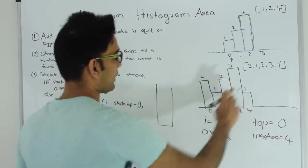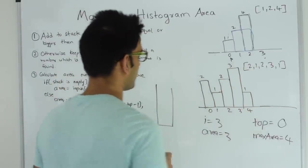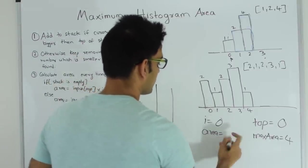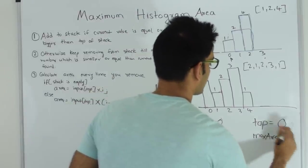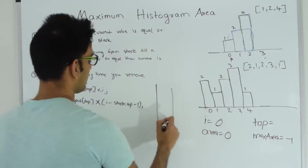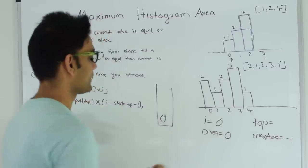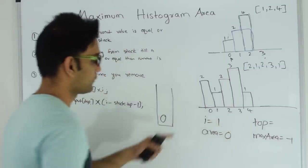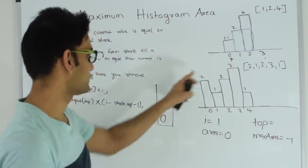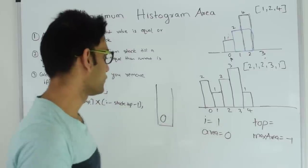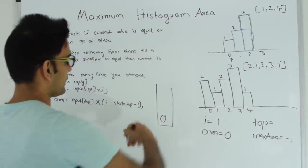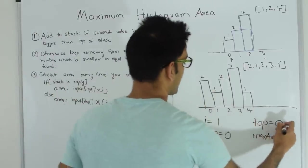Let's try the example with array [2, 1, 2, 3, 1]. i is 0, area is 0, max area is -1. Since the stack is empty, index 0 goes in directly. Now i becomes 1. Since value at i (which is 1) is not greater than or equal to value at index 0 (which is 2), we keep popping from the stack until a smaller number or empty stack is found. So top becomes 0 and we pop it.